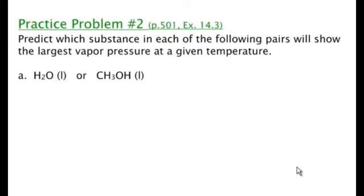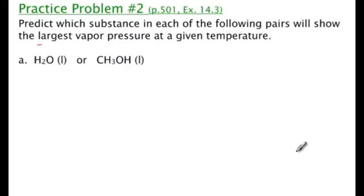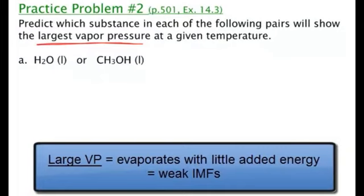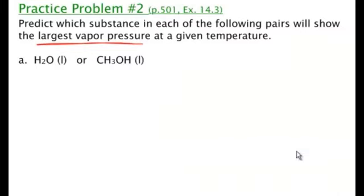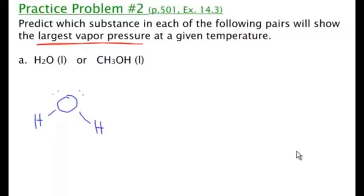Let's work a problem from page 501: predict which substance in each pair will show the largest vapor pressure at a given temperature. First, let's make sure we understand what largest vapor pressure means. Something with a large vapor pressure evaporates easily, meaning the intermolecular forces holding particles together in the liquid state are pretty weak. Having the largest vapor pressure means weak intermolecular forces because the particles evaporate easily. The easiest way to answer this is to draw Lewis structures and think about the polarities of the molecules.